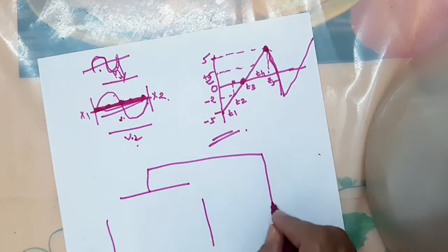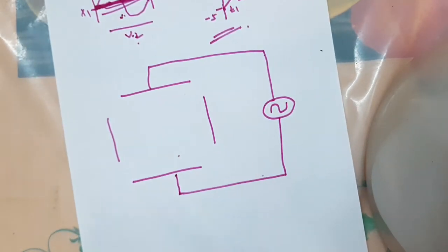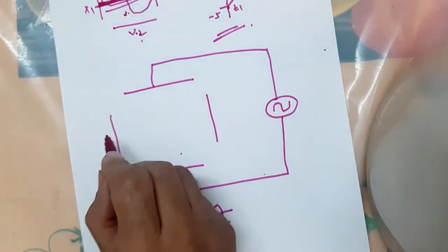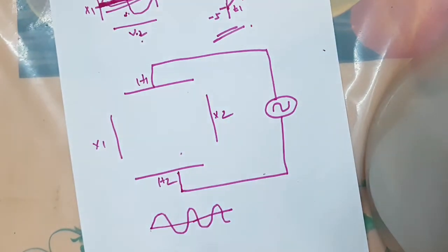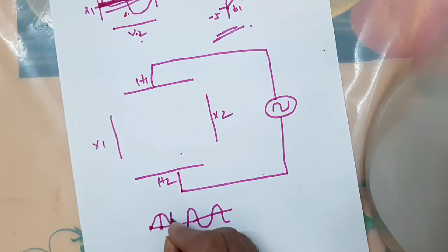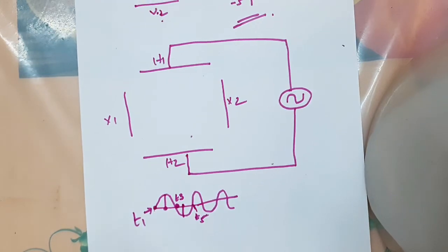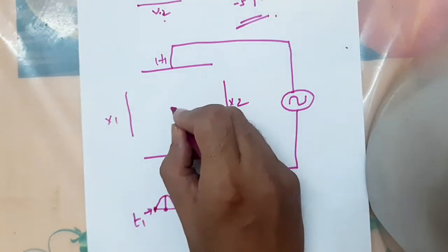We are applying a sine wave to the vertical plates. If our unknown waveform is sine, we apply that sine wave to V1, V2. There is no voltage between X1 and X2. At T1, there is zero voltage between V1 and V2, so the spot is in the center. At T2, the upper plate is at maximum, so the spot moves maximum upward.